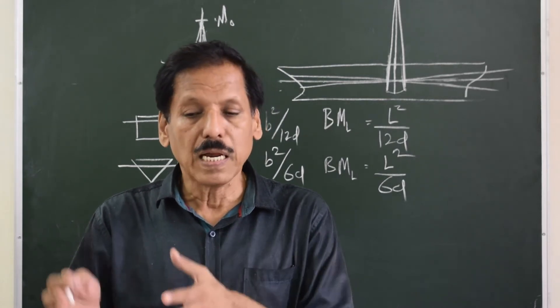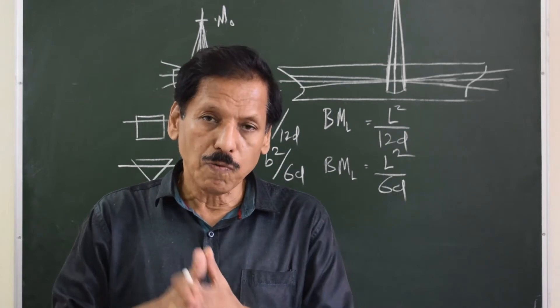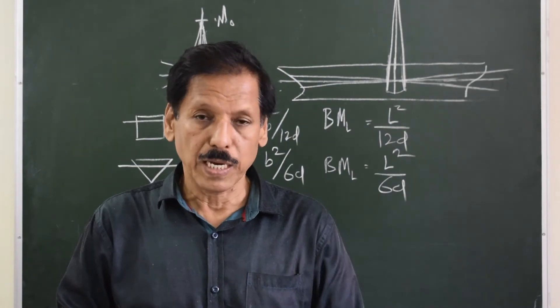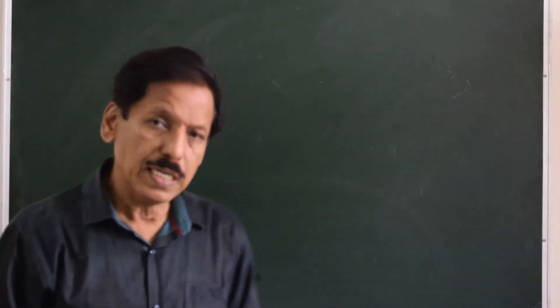This graph is a ready reckoner or a quick reference graph, so for a particular draft, this is the minimum GM I must have or this is the maximum KG I can have. Let us understand GM with the help of heel diagram.